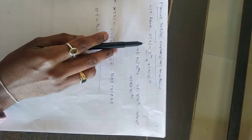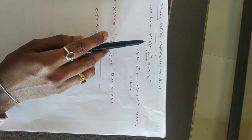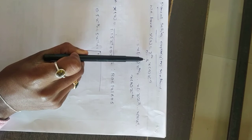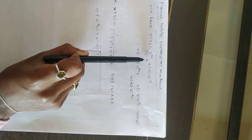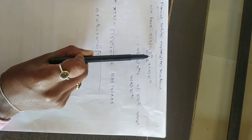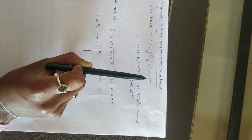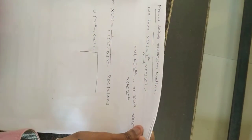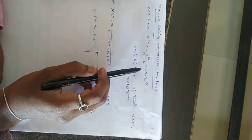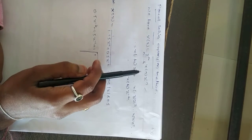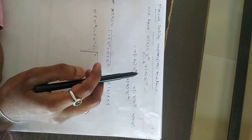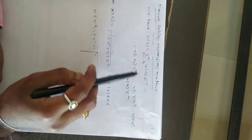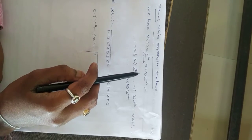We already know that the basic equation of the Z-transform is X(z) = sum from n = -infinity to +infinity of x(n) times z to the power of -n. This is the basic equation. When you substitute any values in place of n, you will get the different Z-transform values.